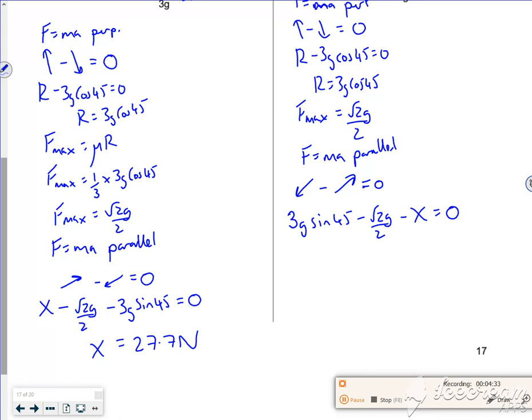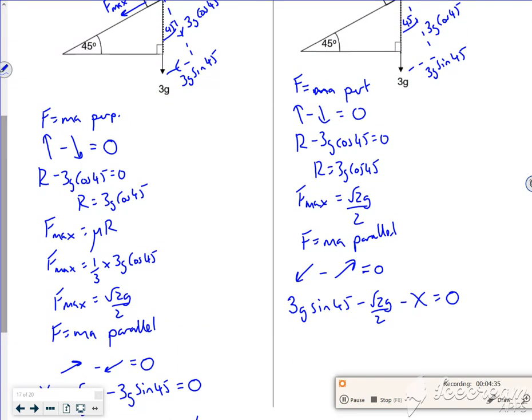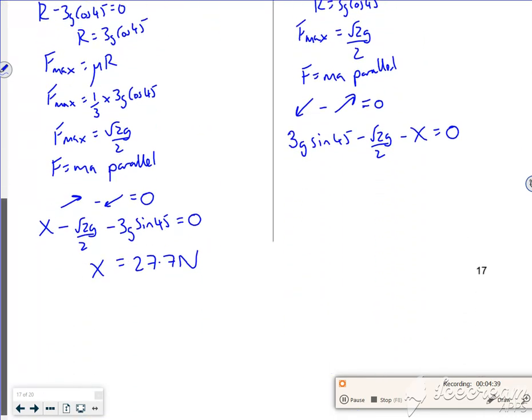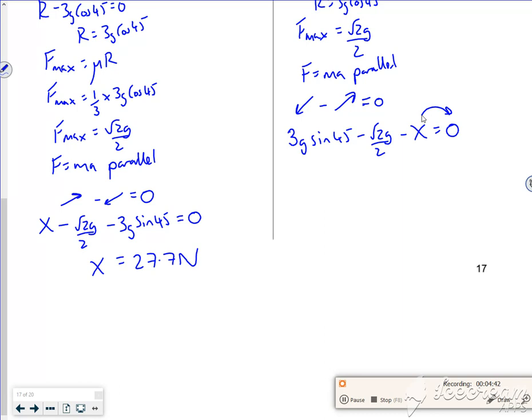Right, so I've set it up now. So the 3g sin 45 is the one that's moving it down the plane. The X and the F max are fighting against it. So if I take the X over and then just work out that bit together, it gives me 13.9 newtons for X. So for it to not move either way, I want it between them. So I want it between the 13.9 and the 27.7 and that's done. See ya.